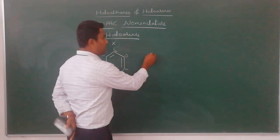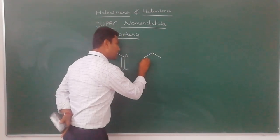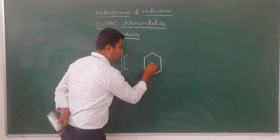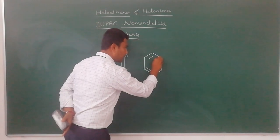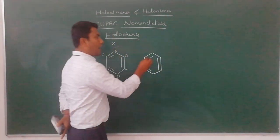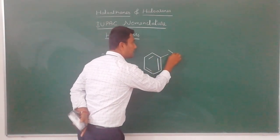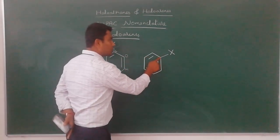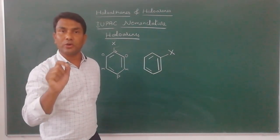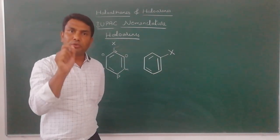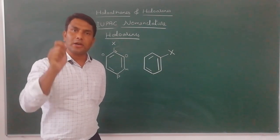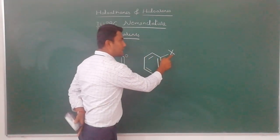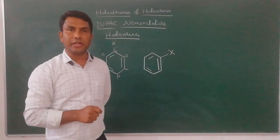Now I will take another example of a benzene ring to which a halogen atom is attached in a different position. We have to assign ortho, meta, and para-positions to the benzene ring with respect to the group already present on the benzene ring.